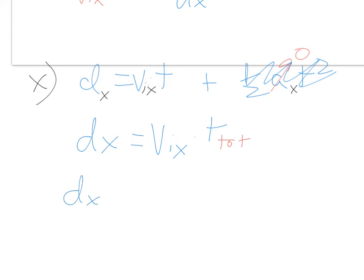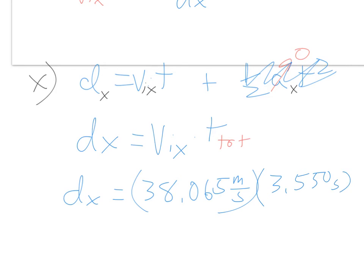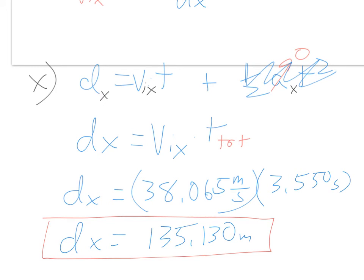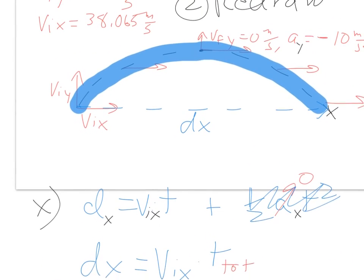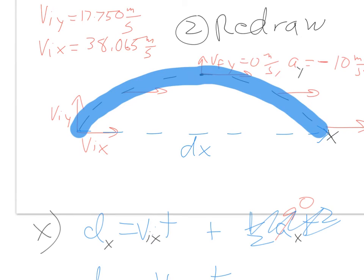So dx equals the initial velocity in the horizontal direction, 38.065 meters per second, times the total time we solved for in question one, which is 3.550 seconds. This comes out to 135.130 meters. I'm keeping three digits past the decimal to avoid rounding errors on WebAssign. The projectile will move through the air and land 135.130 meters away from where it was launched along the horizontal.